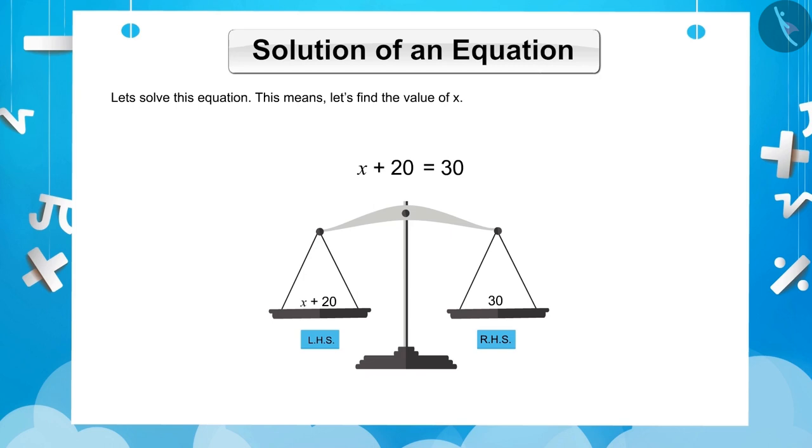We should subtract 20 from LHS so that only X remains in LHS. But to maintain the balance on both sides, that is, LHS and RHS, we have to reduce 20 from both sides.